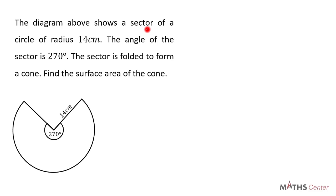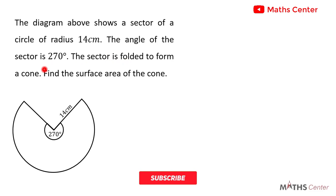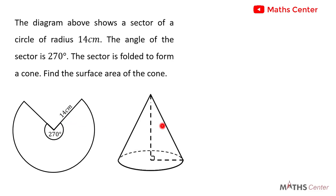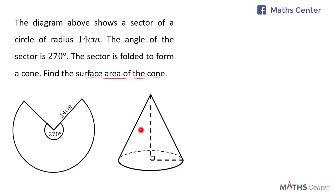The diagram below shows a sector of a circle of radius 14 centimeters. The angle of the sector is 270 degrees. The sector is folded to form a cone. Find the surface area of the cone. This sector is cut out of a circle with radius 14 centimeters and angle 270 degrees. After cutting it out, it was folded to form a cone. The question wants us to use this information to calculate the surface area of the cone that we formed.